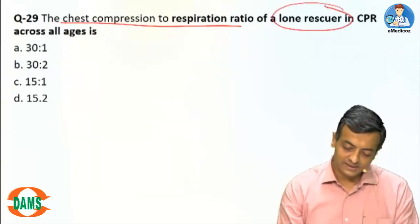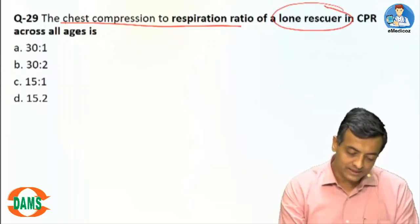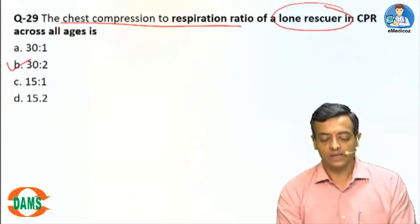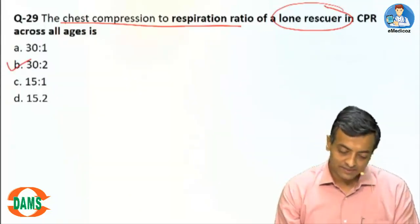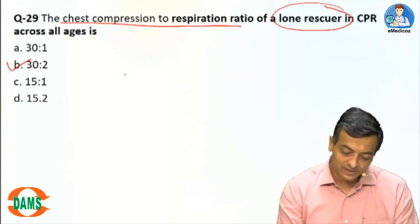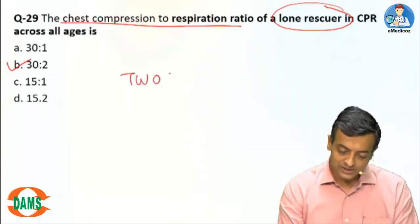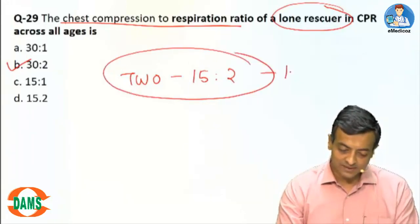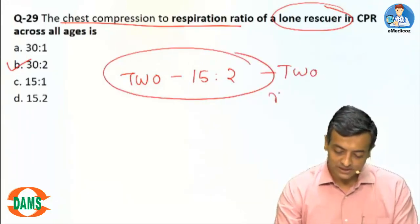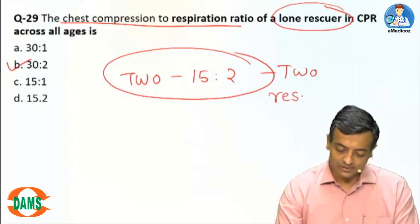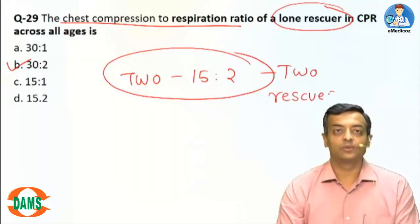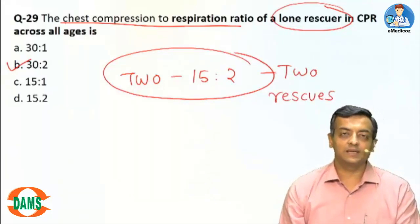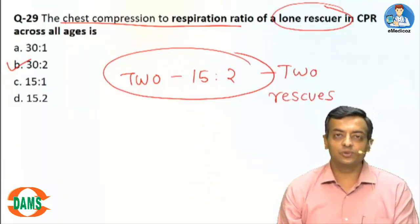Question 29: The chest compression to respiration ratio for a lone rescuer in CPR across all ages is 30:2. If there are two rescuers, it would be 15:2. So the correct answer is 30:2 for a lone rescuer.